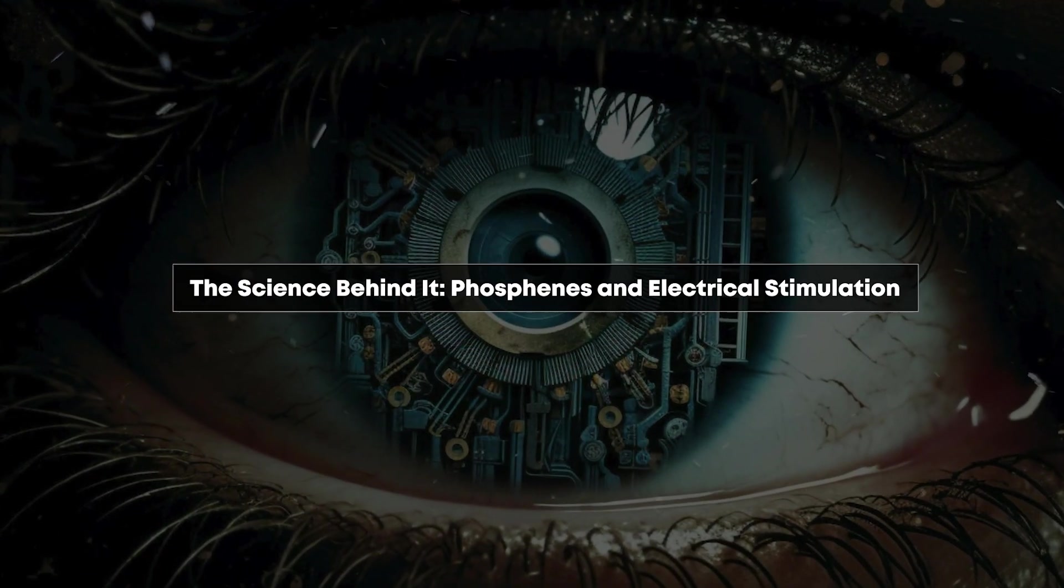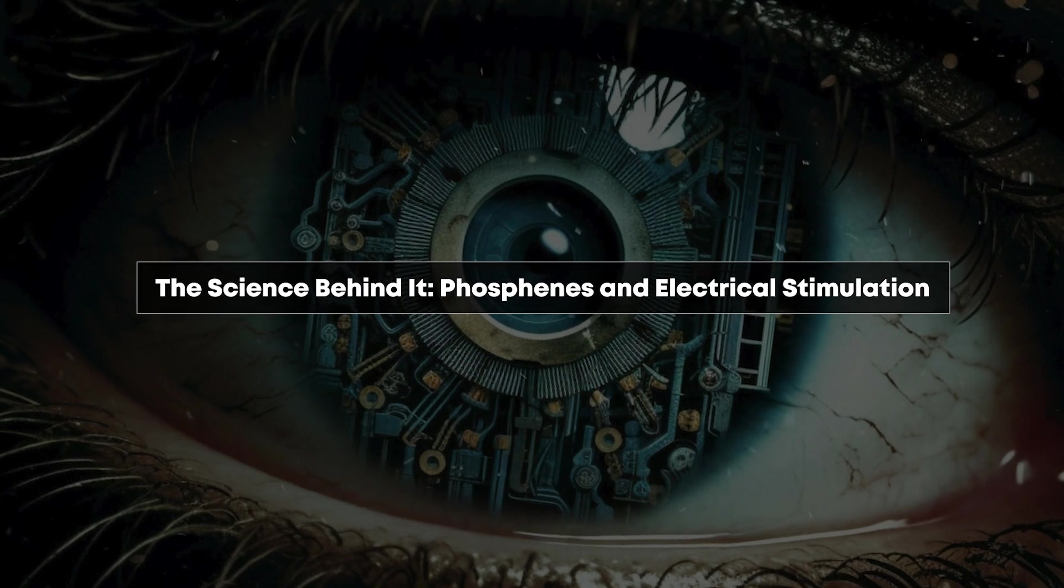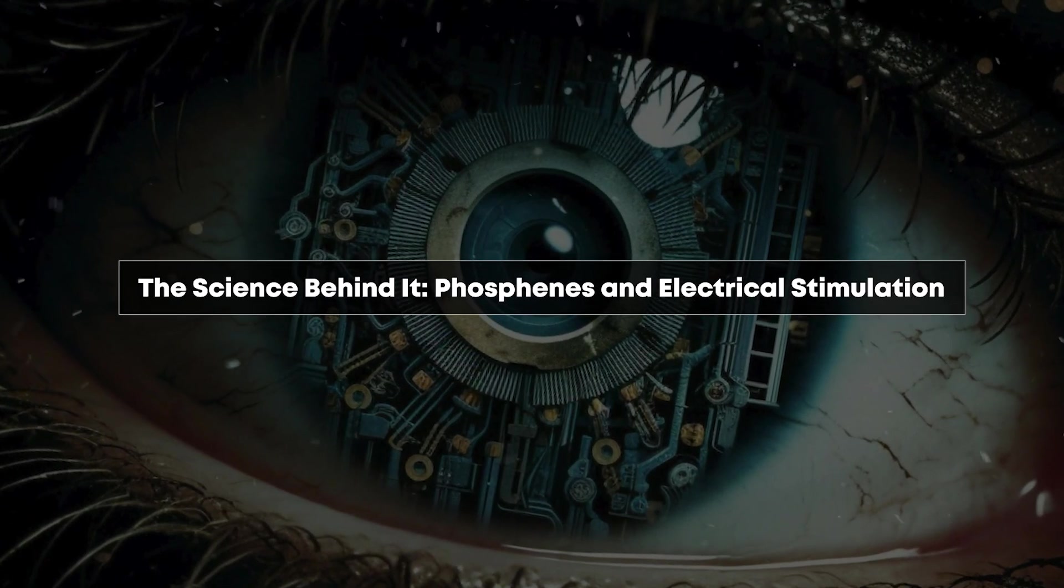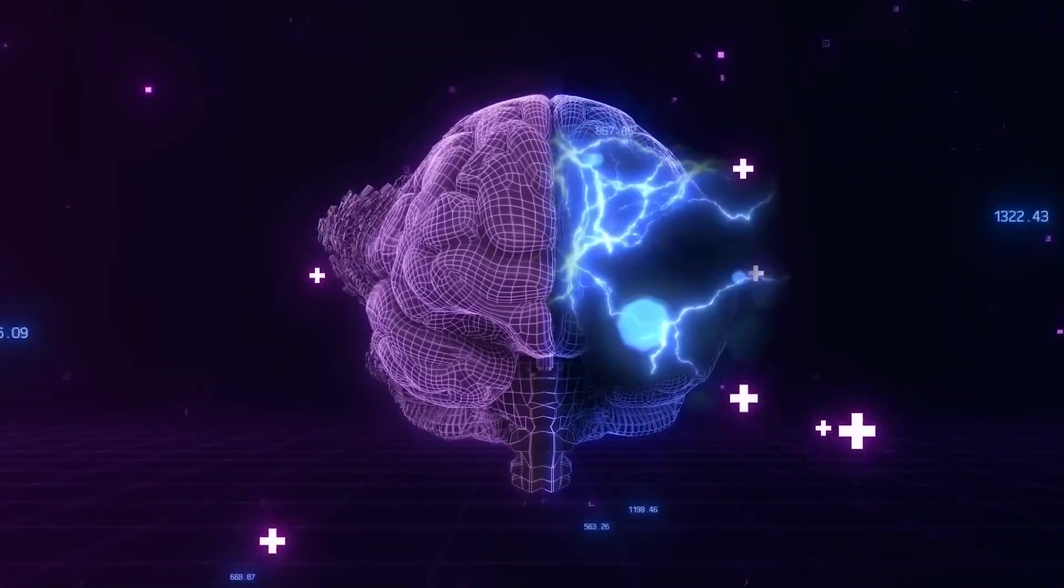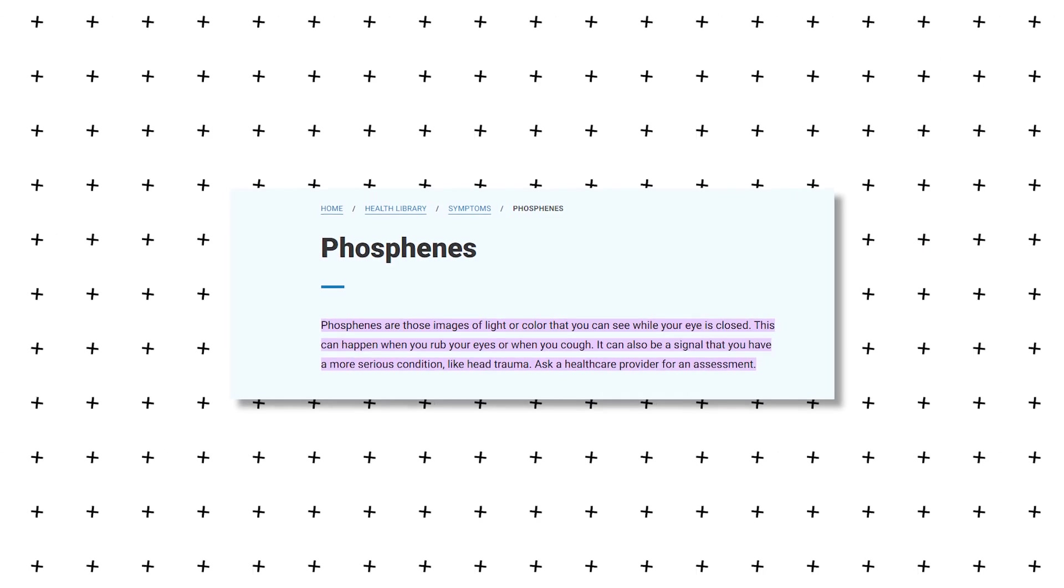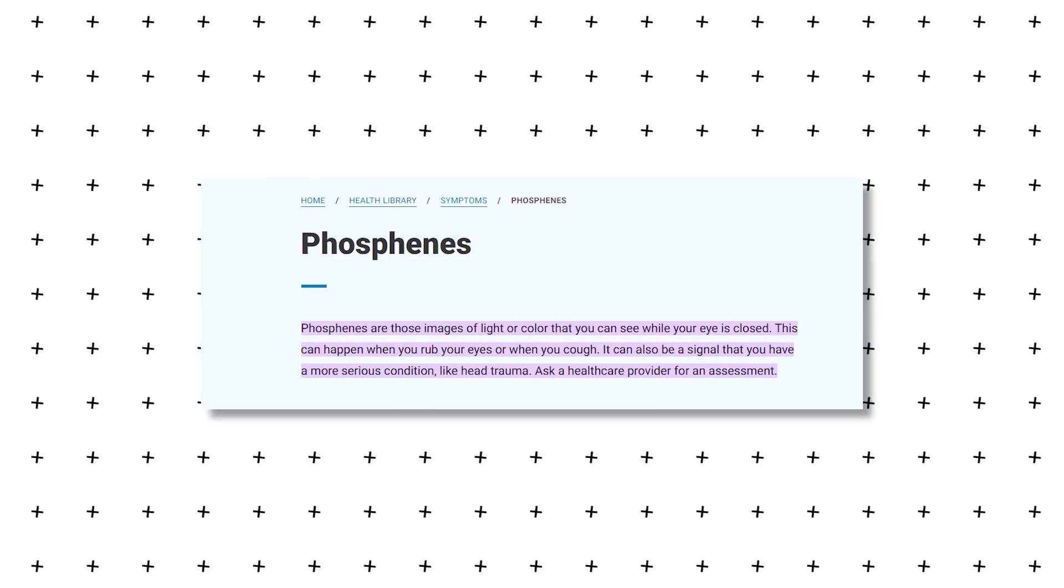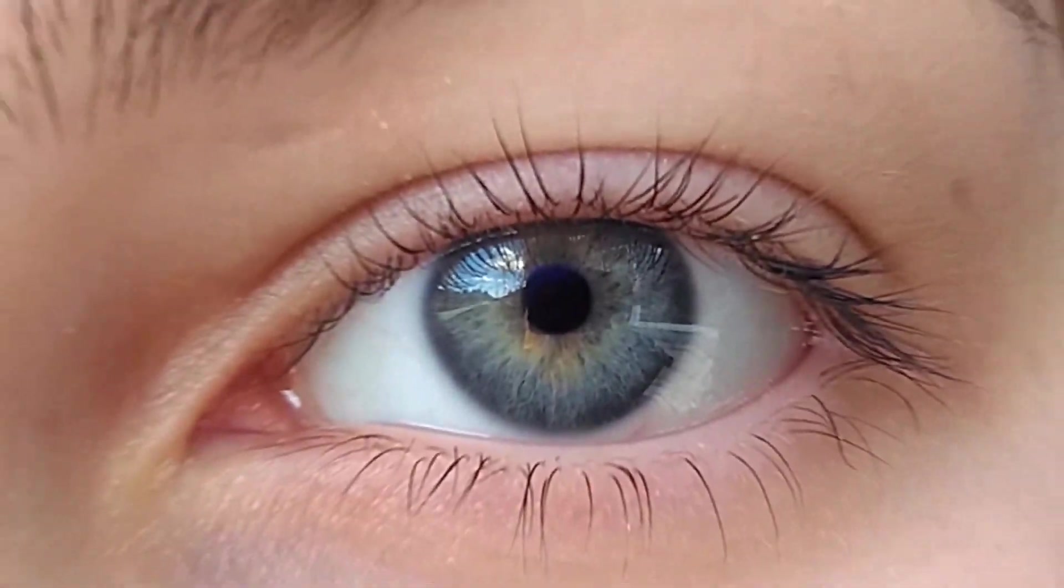Neuralink's approach isn't entirely new, it builds on decades of research into electrical stimulation of the visual cortex. The key to this technology lies in a phenomenon called phosphenes. Phosphenes are the perception of light or patterns when no light is actually entering the eye. You've probably experienced them when rubbing your eyes or after a sudden impact to your head.